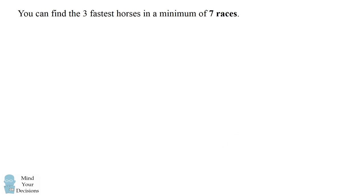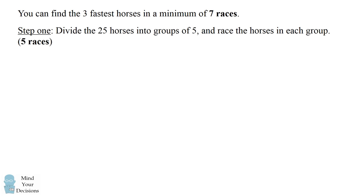The answer is you can find the three fastest horses in a minimum of seven races. I will first describe the procedure in words and then go over the solution in detail so that you understand why it works. The first step is to divide the 25 horses into groups of five and race the horses in each group. This will be a set of five races.